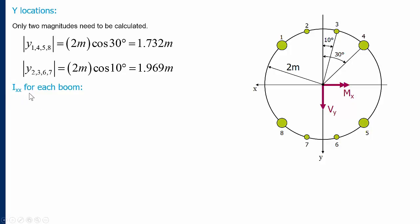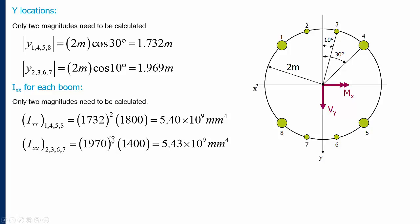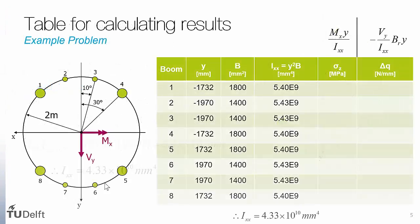We can also look at ixx for each boom. It's convenient that all booms with the same y also have the same area, and ixx per boom is just y² times area. For booms 1, 4, 5, and 8: 1,732² mm² × 1,800 mm² gives 5.4 × 10⁹ mm⁴. For booms 2, 3, 6, and 7: we have a larger y but smaller area of 1,400 mm², giving almost the same result. The total moment of inertia is 4 times each value added together, giving 4.33 × 10¹⁰ mm⁴.